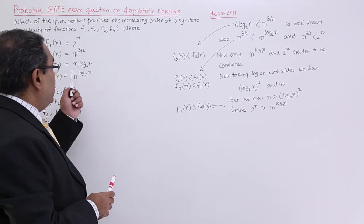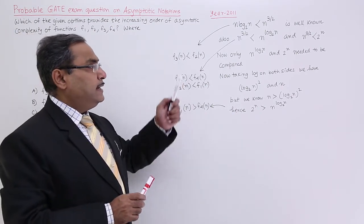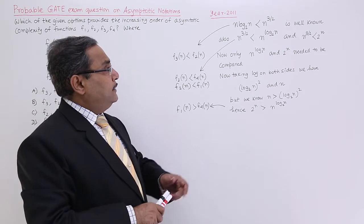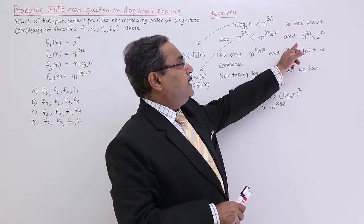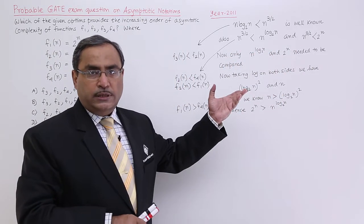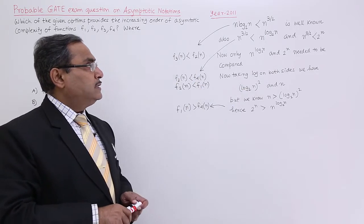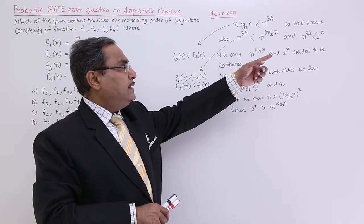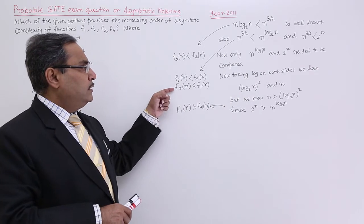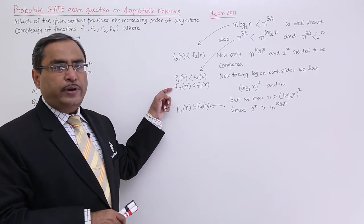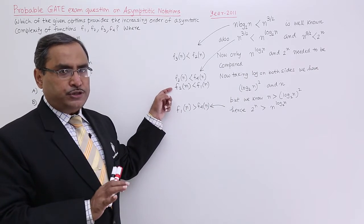From here, we can get that f3 is less than f2, and this is less than this, and this is less than this. You can put some values there and from the very conception, you can easily write that it is less than this and that is less than that. These two inequalities also we are getting from the very observation.